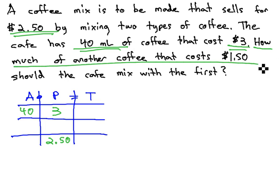We want to know how much of another that costs $1.50 should be mixed in. We don't know the amount we're mixing in, but we do know it costs $1.50.